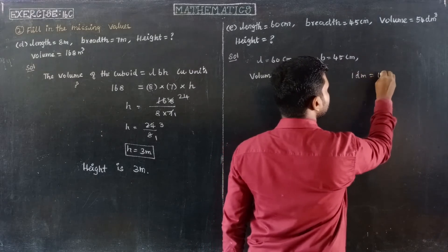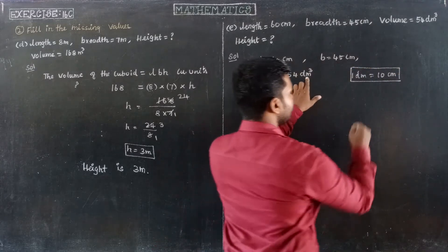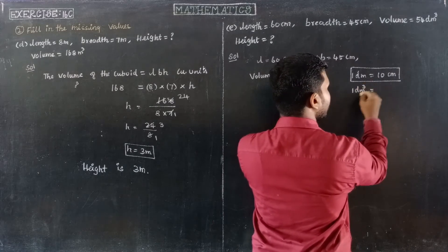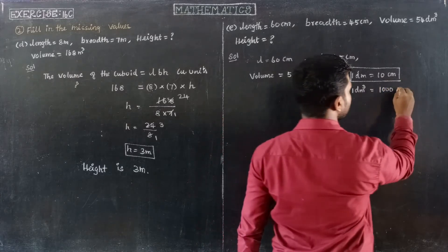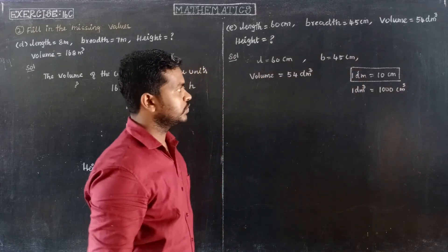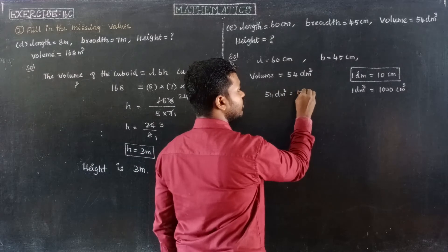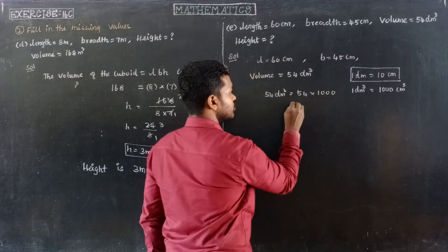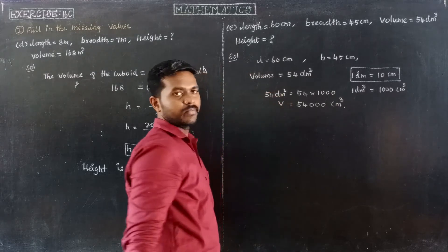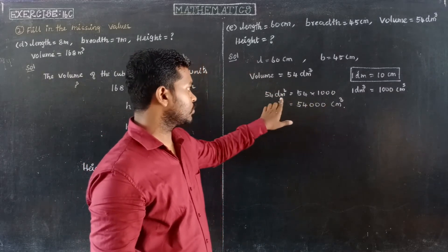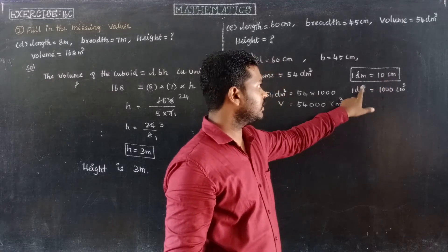We know that 1 decimetre is equal to 10 centimeters. Therefore, 1 decimetre cube is equal to 10 cube centimeters cube, which equals 1,000 centimeters cube. So the volume of 54 decimetre cube equals 54,000 centimeters cube.